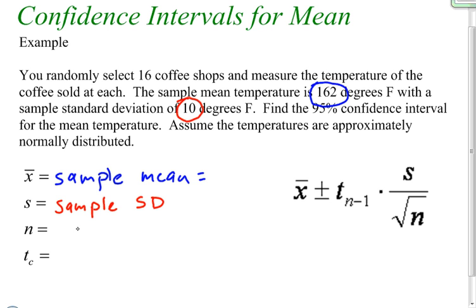Then we've got n, and n is our sample size. At the very beginning of the problem, it tells us that our sample size is 16.